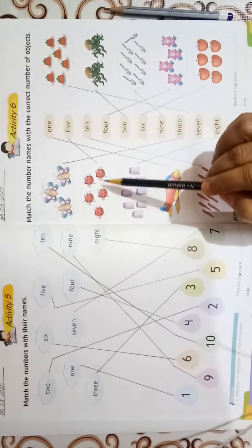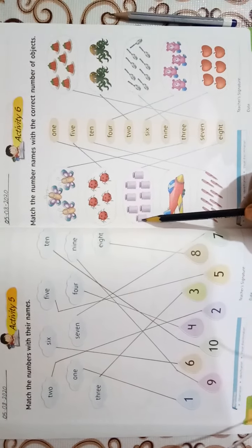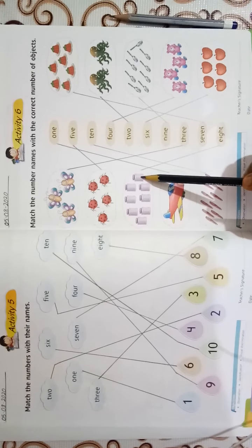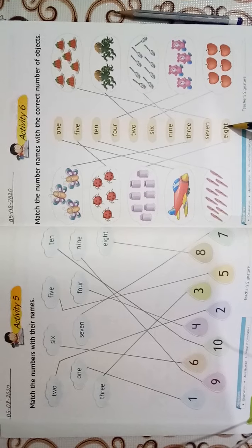1, 2, 3, 4, 5. Five insects, we will match with F-I-V-E 5. 1, 2, 3, 4, 5, 6, 7, 8. Eight jars, we will match with E-I-G-H-T 8.